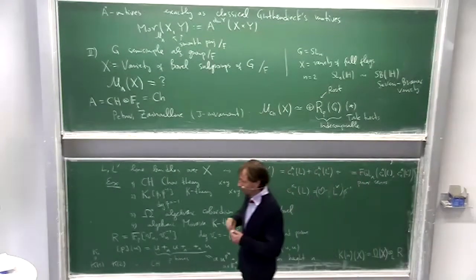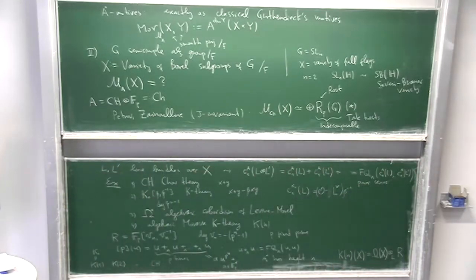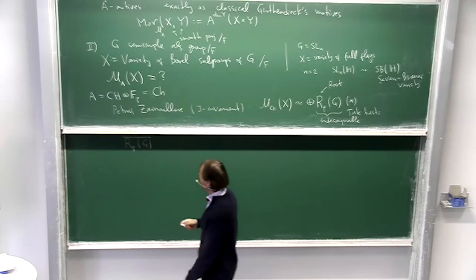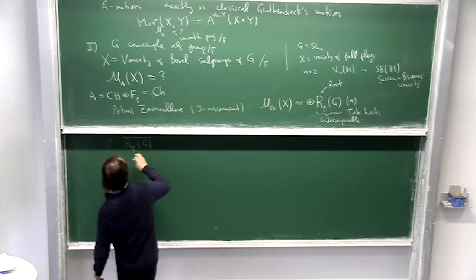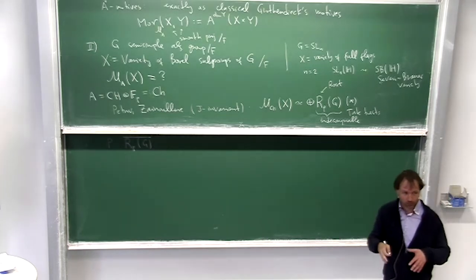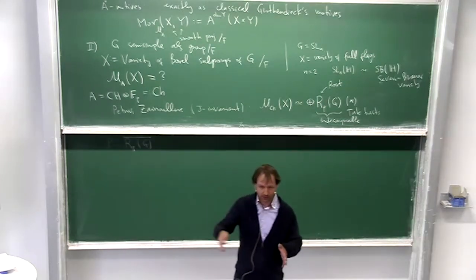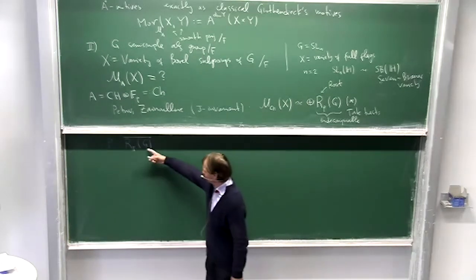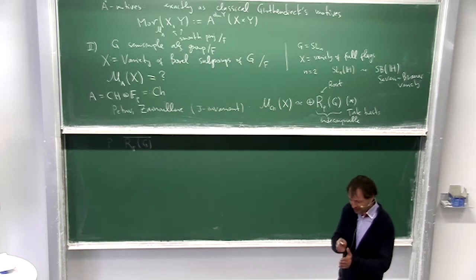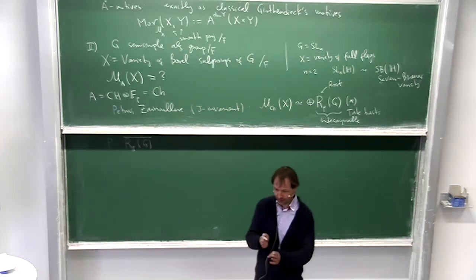And moreover, when we pass to an algebraic closure of F, we have the following funny formula for this motive. So if we go to F bar, and then we compute, well, over an algebraically closed field X is cellular because of the Bruhat decomposition, so the motive is just a sum of Tate motives of different shifts. So this motive is also a sum of Tate motives over a closed field. So you just count the Tate motives of all sheets, how many Tate motives in shift L, and put them into a polynomial, a polynomial in T.